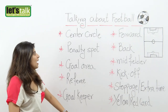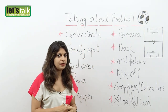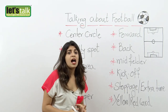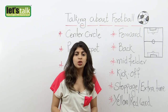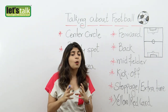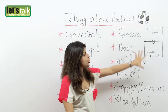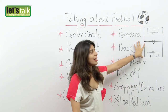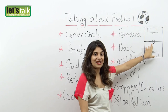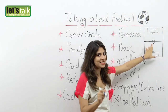The first one we have is a center circle. What is a center circle? A center circle is a circular marking which is in the center of the football field, with a radius of 10 yards. Let's assume this is our football field — this is the center circle from which the kick-off starts.